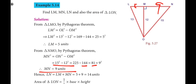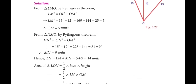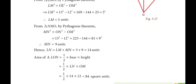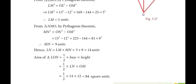LM is 5 units and MN is 9 units, so LN = LM + MN = 14 units. The area of triangle LON: area = ½ × base × height = ½ × LN × OM = ½ × 14 × 12 = 84 square units.